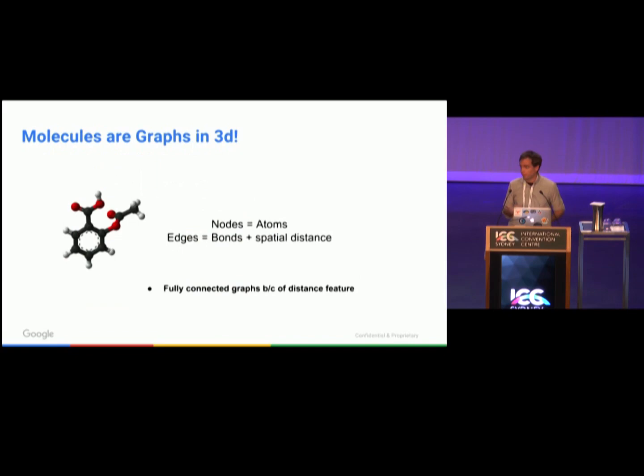In our work, we're going to view molecules as graphs in three dimensions. The nodes of our graphs are the atoms of the molecule, and the edges are bonds plus spatial distance information. For many applications, we will have a 3D orientation of a molecule, and we encode that in the graph by the pairwise distances between pairs of nodes. This means that our graphs are fully connected because of the spatial distance feature.